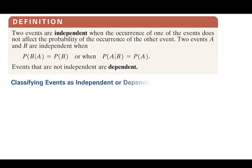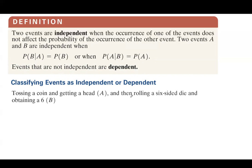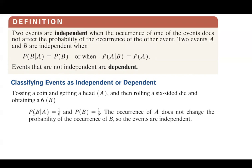Let's classify events as independent or dependent. Tossing a coin and getting a head, then rolling a six-sided die and obtaining a six. The probability of B given A is 1/6, and the probability of B is also 1/6. The occurrence of event A — tossing a coin and getting a head — doesn't change the probability of event B — rolling a six-sided die and obtaining a six. These two events are absolutely independent.